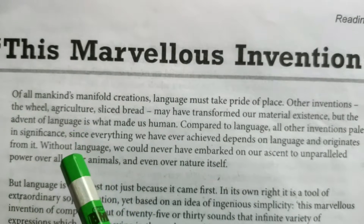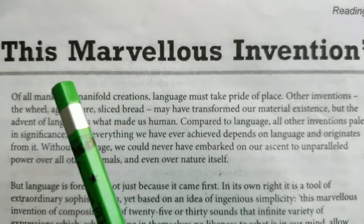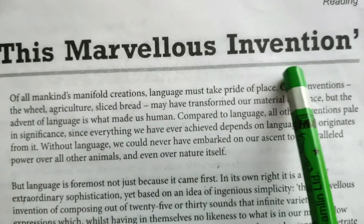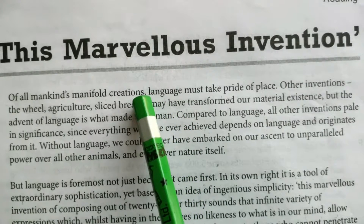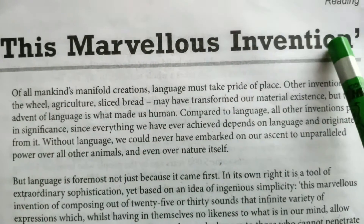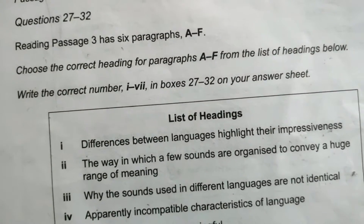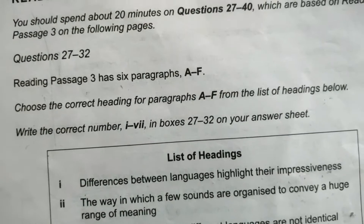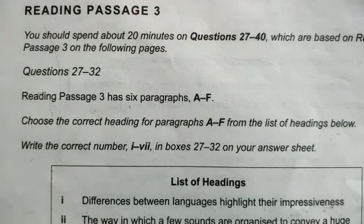Let's start reading the paragraph. Let's take a look at the title of the passage. Always read the heading of the passage — it's very important. The heading of this passage is 'This Marvelous Invention.' In this way we are conveying this message to our mind: we are going to read about a marvelous invention and get some knowledge from this paragraph.